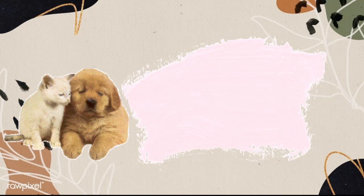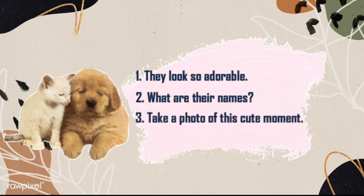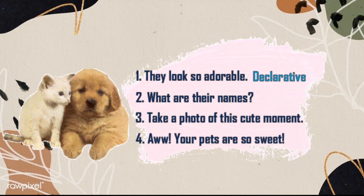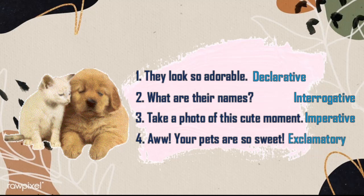How about for this last image? These are the sentences that I made. Number one: they look so adorable. What are their names? Take a photo of this cute moment. Aww, your pets are so sweet! Number one is a declarative sentence, the second one is an interrogative sentence, the third one is an imperative sentence, and the last one is an exclamatory sentence.